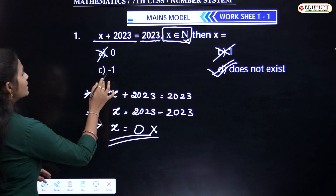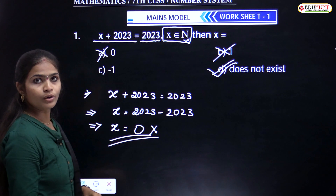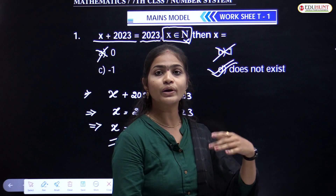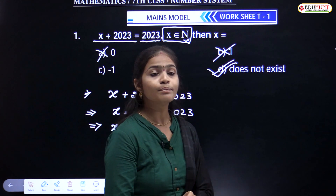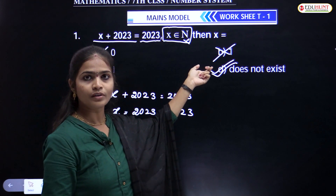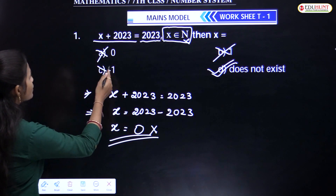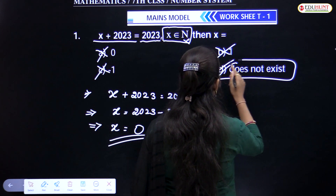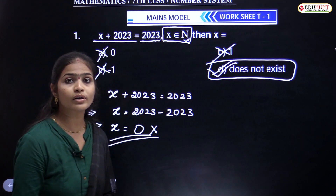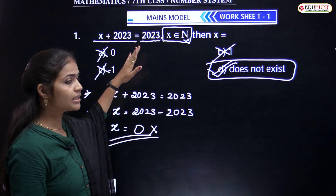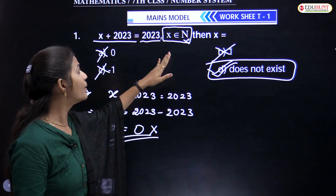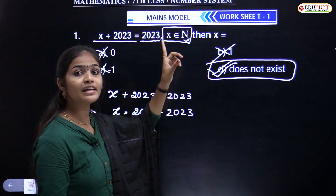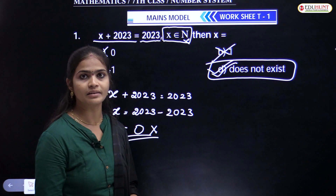The only possibility is 2023 plus 0. But here x should be a natural number, and 0 is a whole number. That is why this is not possible. In your examination, you have to check that condition. Here 0 is the mathematical answer, but the condition says natural numbers. In whole numbers only that is possible. The answer is does not exist.